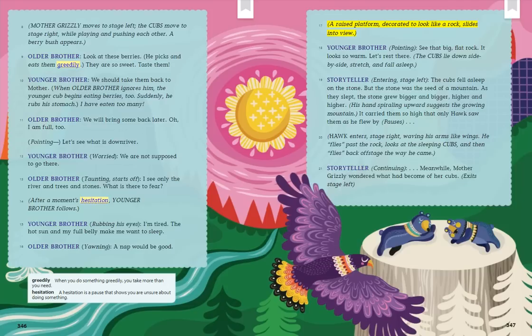A raised platform decorated to look like a rock slides into view. Younger Brother, pointing: See that big, flat rock? It looks so warm. Let's rest there. The cubs lie down side by side, stretch, and fall asleep. Storyteller, entering stage left: The cubs fell asleep on the stone. But the stone was the seed of a mountain. As they slept, the stone grew bigger and bigger, higher and higher. His hand spiraling upward suggests the growing mountain. It carried them so high that only Hawk saw them as he flew by.